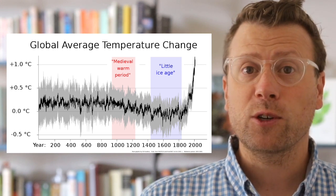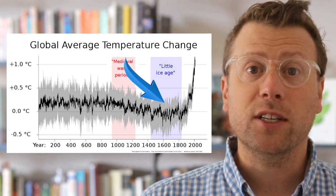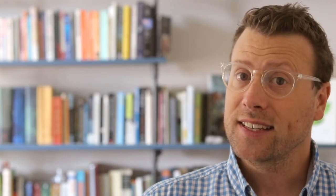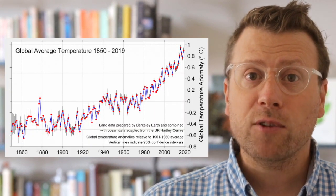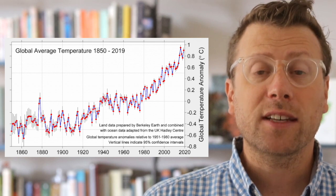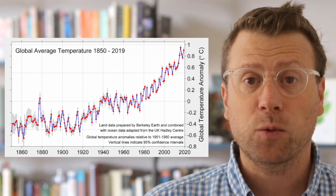By 1750, ice had completely overridden the valley and reached its maximum extent. This period of glacial advance occurred during the Little Ice Age, when average global temperatures dropped by as much as half a degree Celsius. Since then, the glaciers have been rapidly retreating due to global warming, which has raised the average global temperature by over one degree Celsius in the last 100 years.